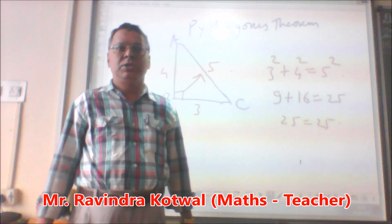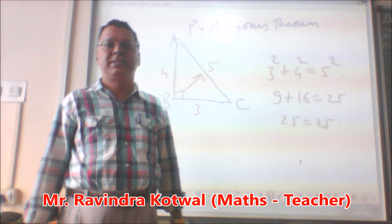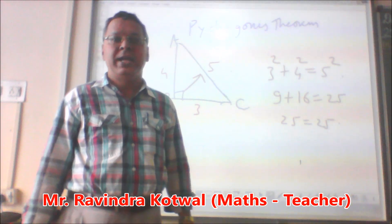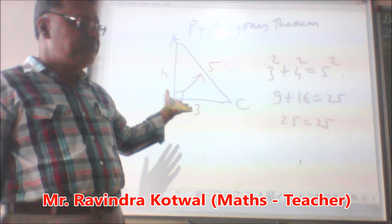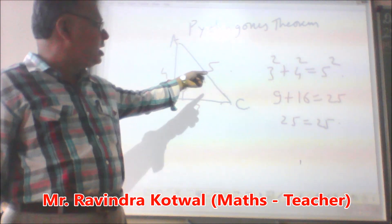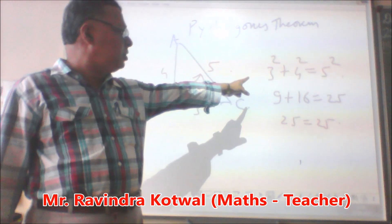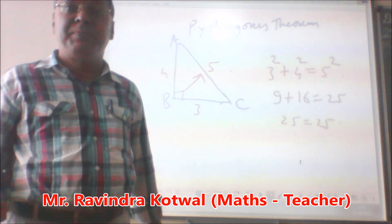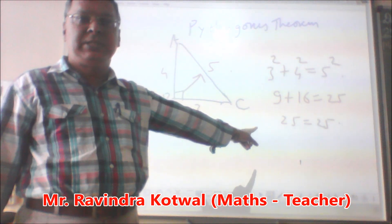Good morning. Pythagoras — here in class 7 mathematics we consider a right angle triangle where one angle is 90 degrees. Look at the diagram: the angle B is 90 degrees and the sides are 3, 4, and 5. Let us take the addition: 3 square plus 4 square is equal to 5 square, that is 9 plus 16 equals 25. Let us verify LHS equals RHS — Pythagoras theorem verified.